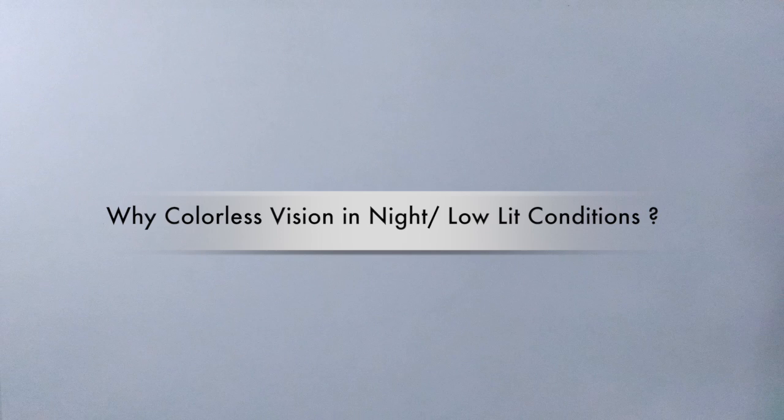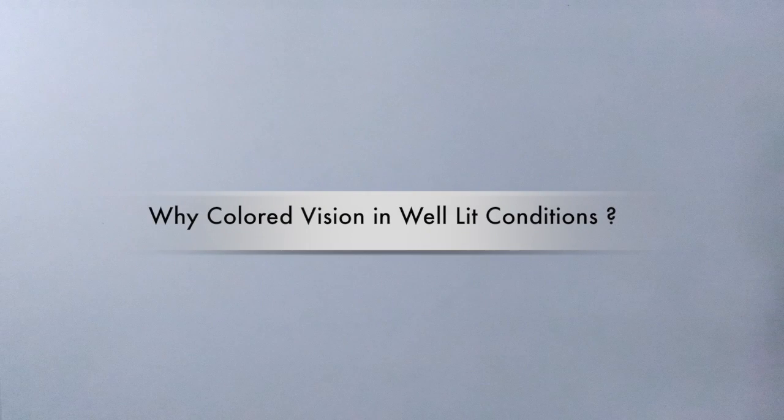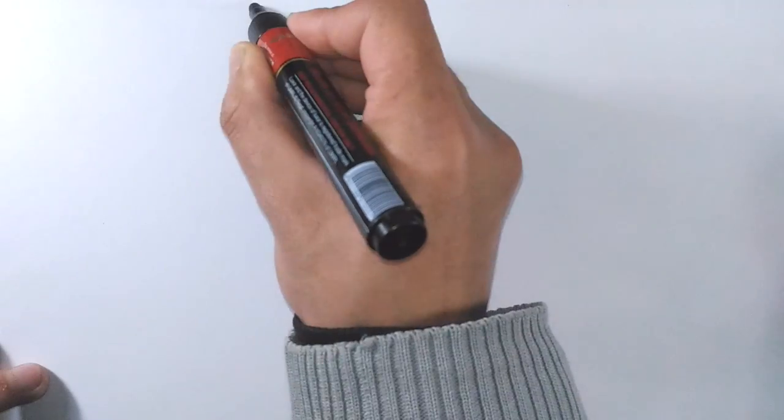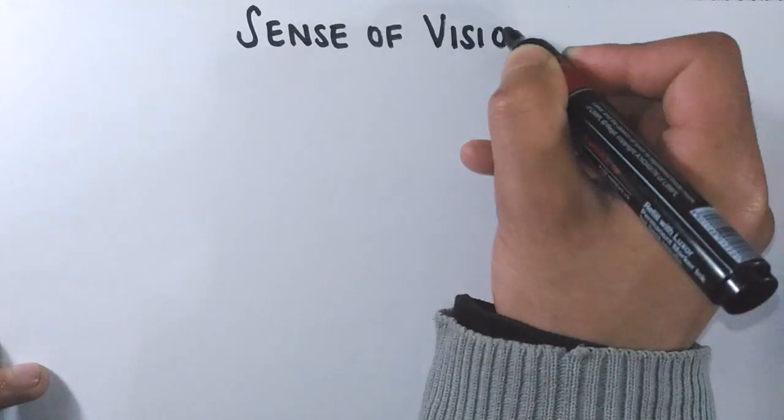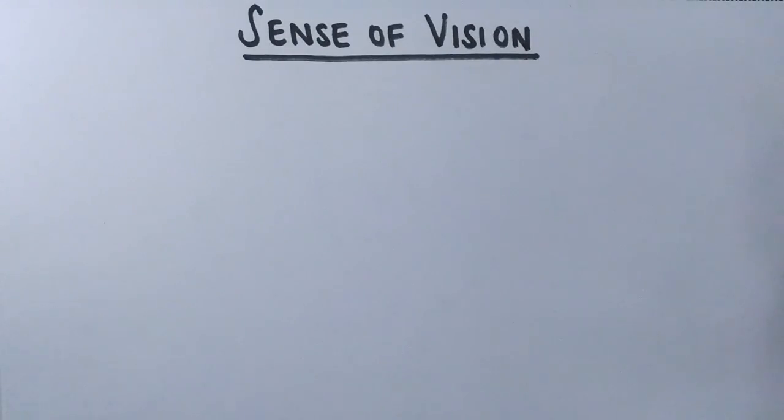We do not seem to perceive colors in dim light very well like we see in normal light. Why does this happen — our vision getting black and white at night and saturated with colors in daytime? What cells are coming into action? What is our nervous system up to? In this video we will clear the concepts regarding the sense of vision, or we can say sight.